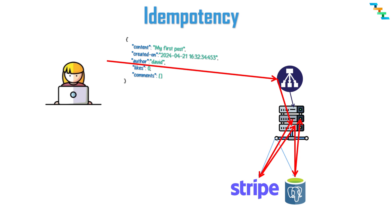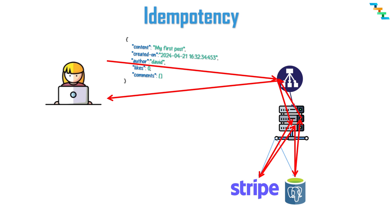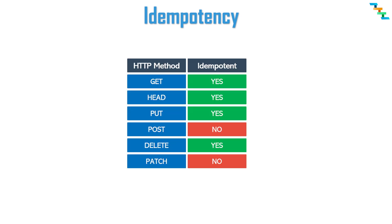Finally, the error can occur while the service tries to acknowledge the request by sending a response. In this case, the request is processed successfully, so retrying the request will surely result in double processing. Let's see the idempotency of different HTTP methods commonly used in RESTful APIs.